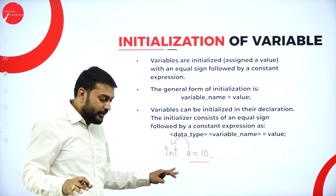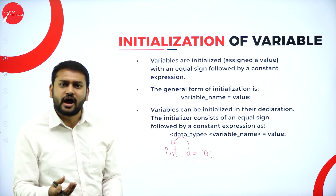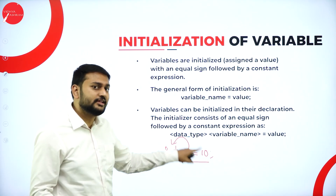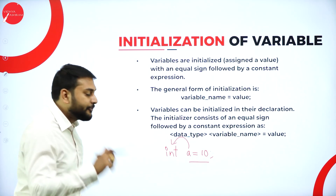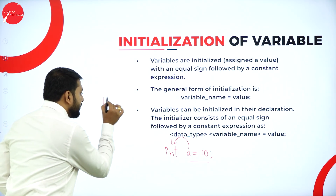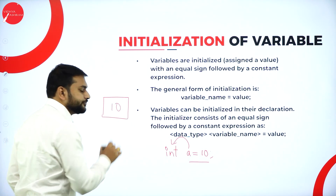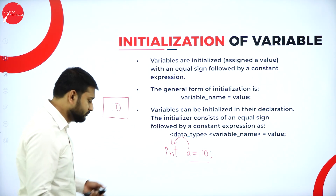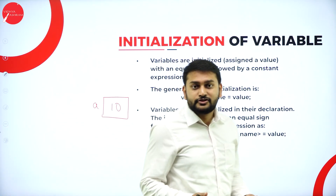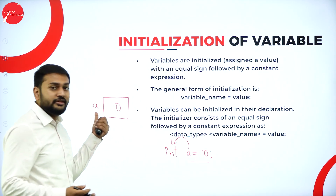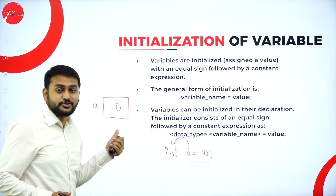You might get a doubt: am I storing the value 10 in A? What happens at the back is — imagine this is a memory. In this memory, I am storing 10. But for this memory location, I am giving a name, that is A. That's what you need to remember. For that location, I am just giving the name — that's what I will call a variable.